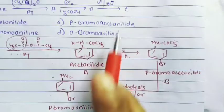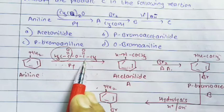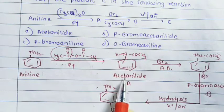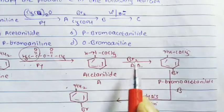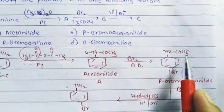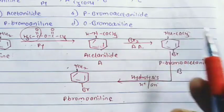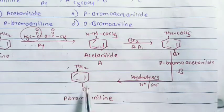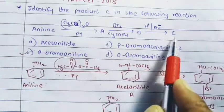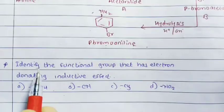So product C is para-bromoaniline. To summarize: aniline reacts with acetic anhydride to form acetanilide (A). Acetanilide reacts with bromine to give para-bromoacetanilide (B), with bromine attaching at the para position. Hydrolysis of B removes the COCH3 group, deprotecting the nitrogen to give NH2, forming para-bromoaniline as product C. The answer is option C.